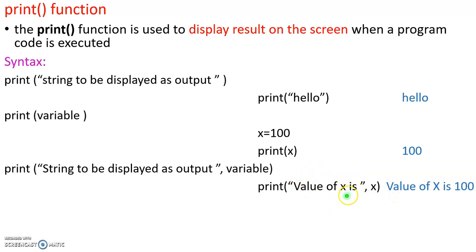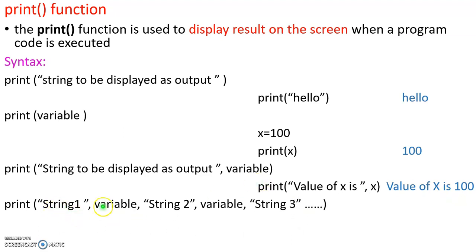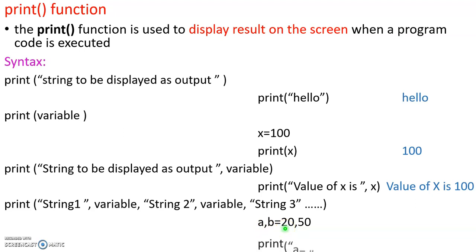For example: print('value of x is', x). This prints the string followed by the variable value on the output screen. We can also print multiple variables: print('string1', variable1, 'string2', variable2, 'string3', variable3). For instance, with two variables a = 20 and b = 50: print('a =', a, 'b =', b).